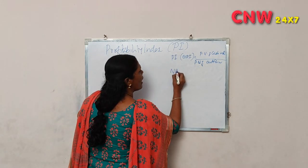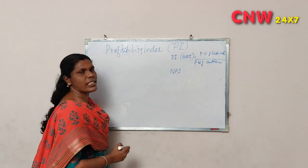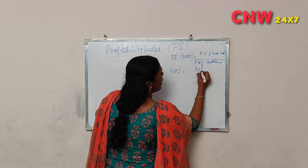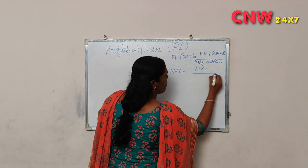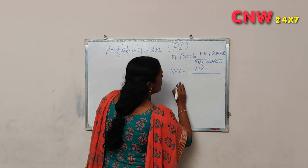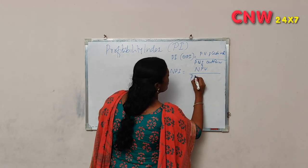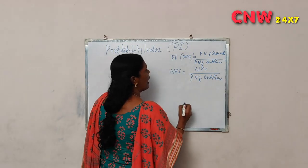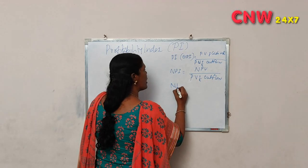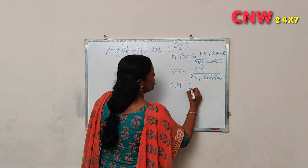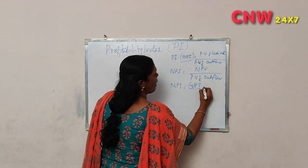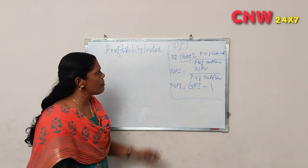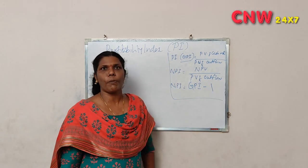We are going to use the NPI method — the net profitability index method. NPI is equal to GPI divided by the present value of outflow. NPI is equal to GPI minus 1.